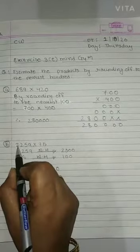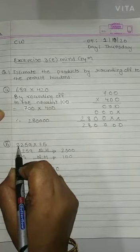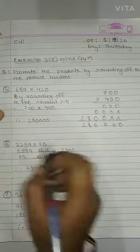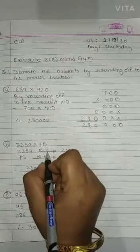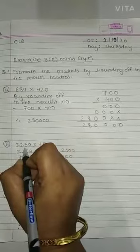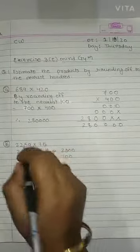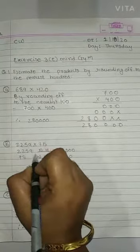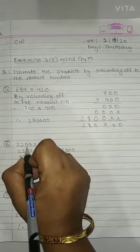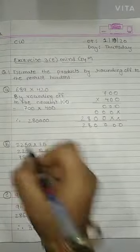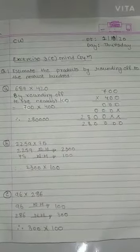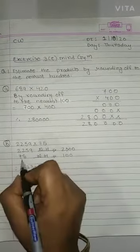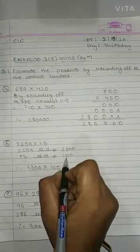2259 multiply with 75. Now, we have 2259, nearest hundred, find out. So 2259, which two hundreds does it fall between? 2200 and 2300. But the given number 2250 is closer to 2300. Then 75 ka nearest hundred is 100.